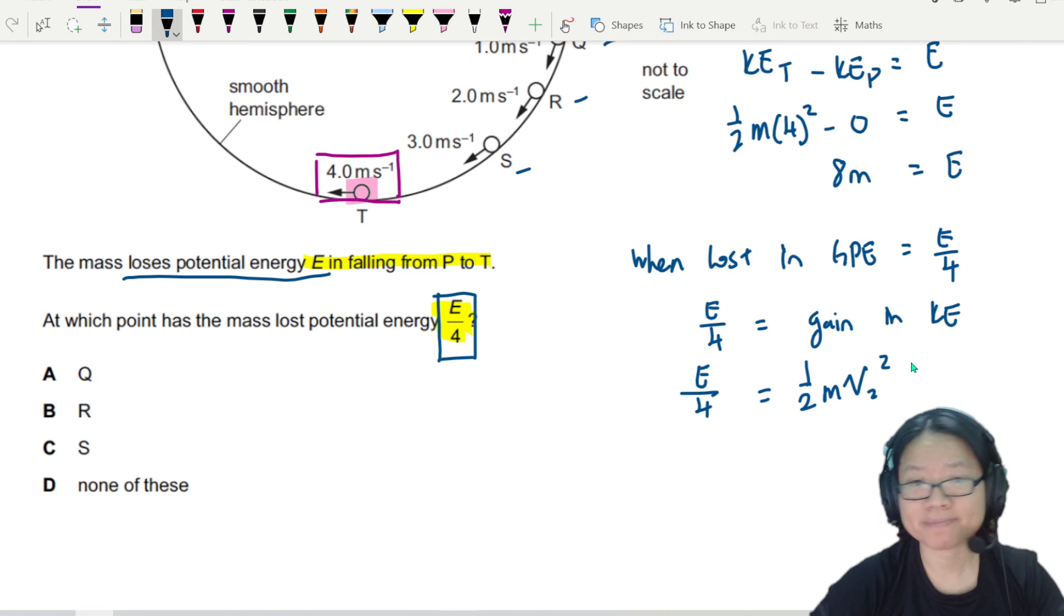Previously, that one was just V. So right now, this is E over 4. But I know E. E is 8m. See this? So I'm going to put 8m here. 8m over 4 is equal to half mv squared. Do you see the m will cancel off?